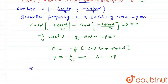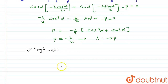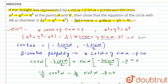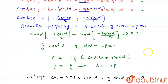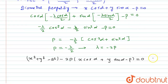We substitute the value of lambda back into the equation of the circle: x squared plus y squared minus a squared minus lambda times (x cos alpha plus y sine alpha minus p) equals 0. Substituting lambda equals minus 2p, we get x squared plus y squared minus a squared plus 2p times (x cos alpha plus y sine alpha minus p) equals 0. This is exactly what we had to prove, and hence it is proved. This is the required solution. Thank you.